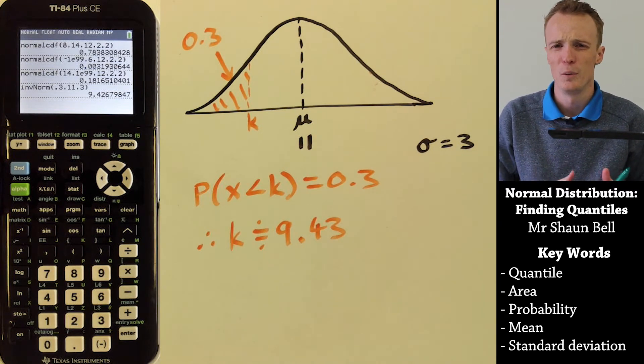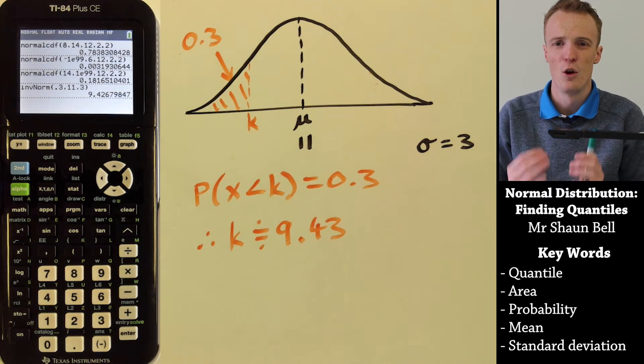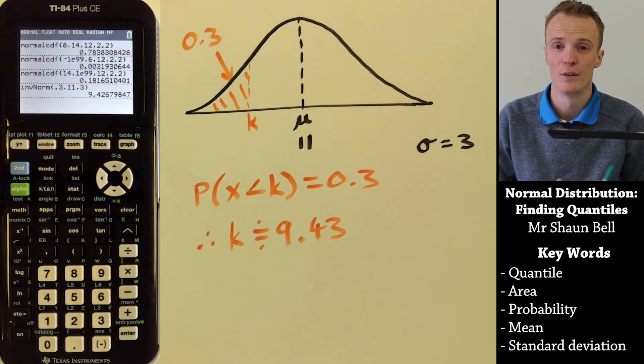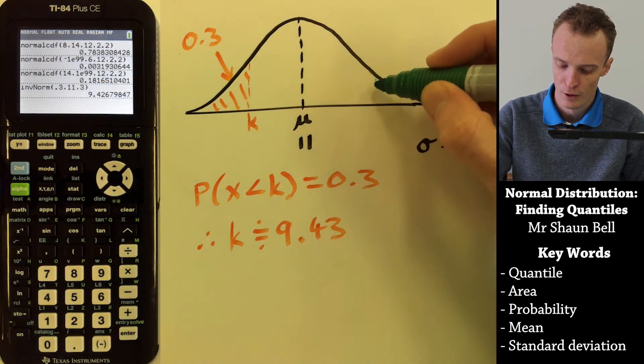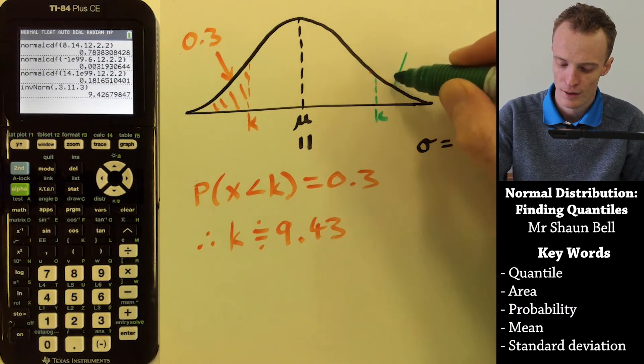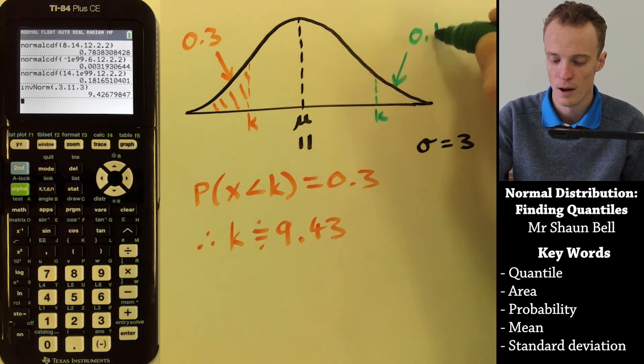But let's pretend that we also were interested in the top 10%. We want to know what the minimum score is to be in that top 10%. So our new K value will actually be up here, and we know that in this section is 10% of the area, or 0.1.